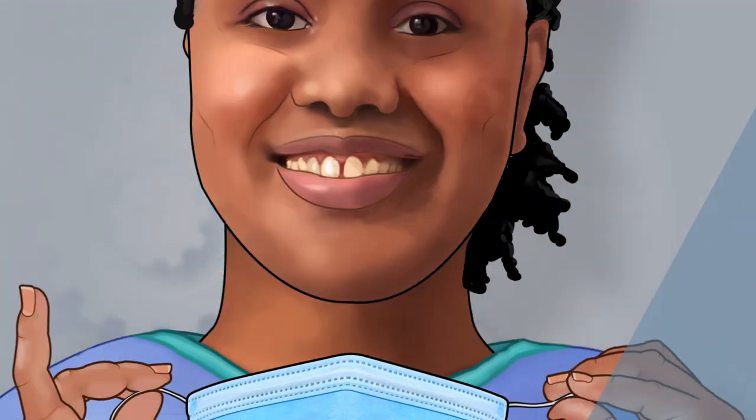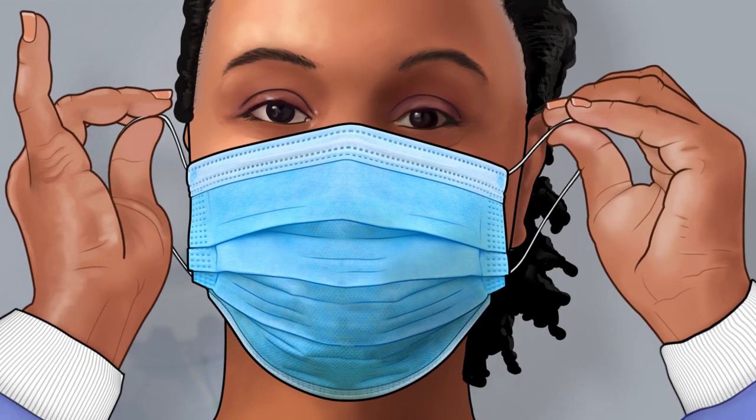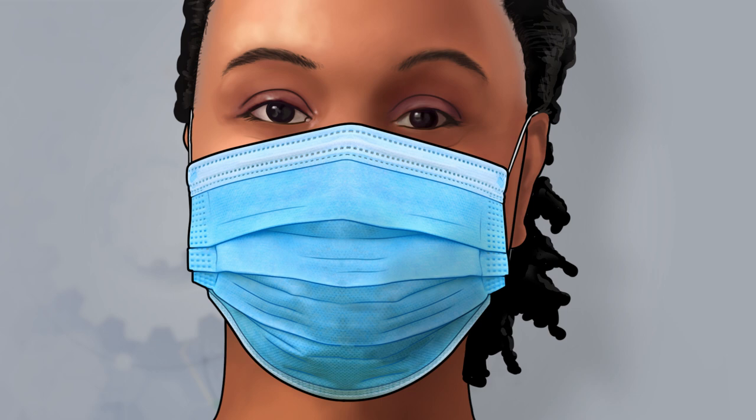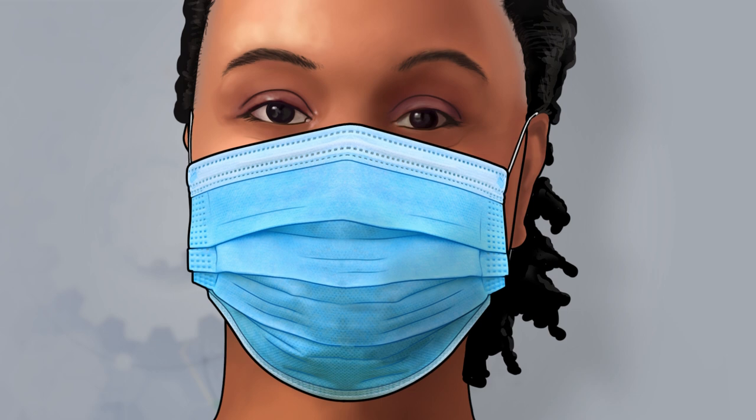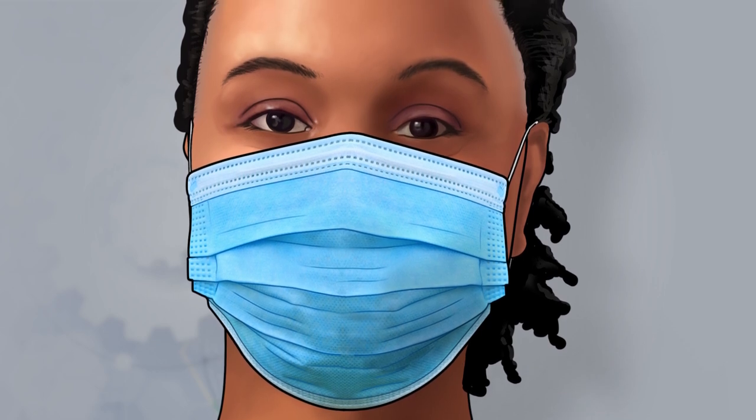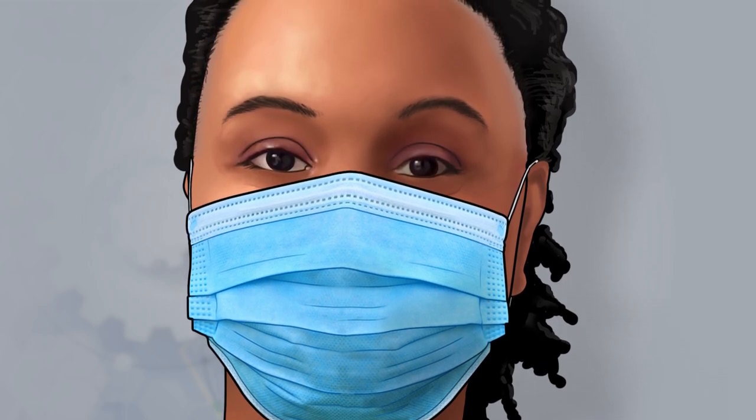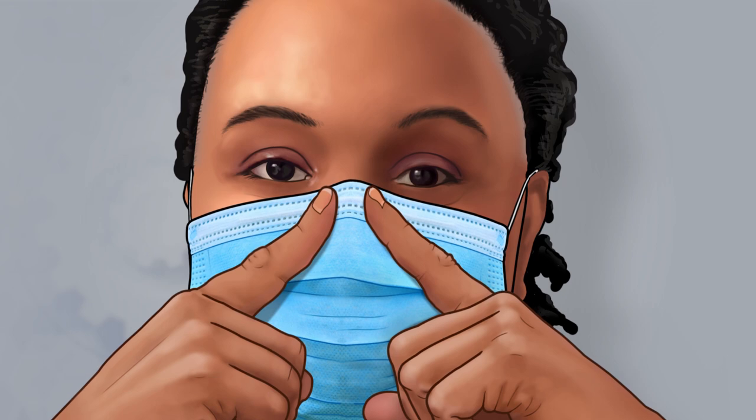Next, put on your disposable face mask with ear loops behind your ears, ensuring a snug fit against your face. With your index finger of both hands, press down on each side of the flexible nose piece so that the top of the face mask fits snugly against your nose and cheeks.